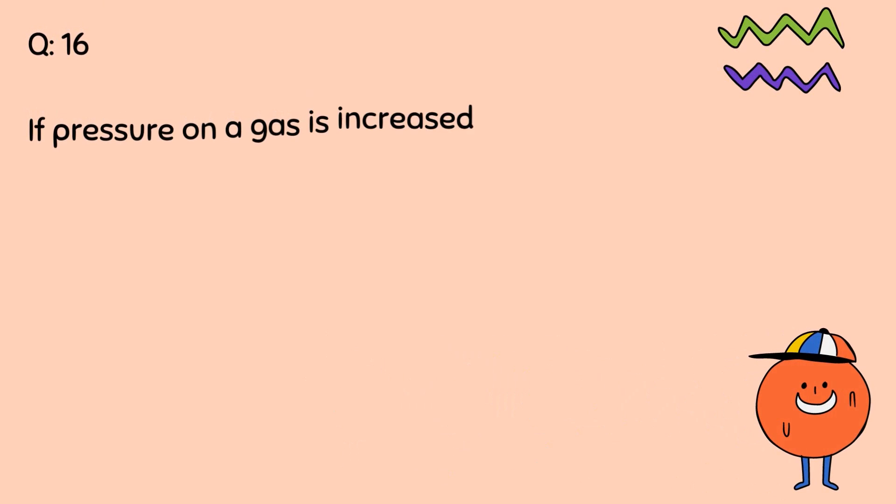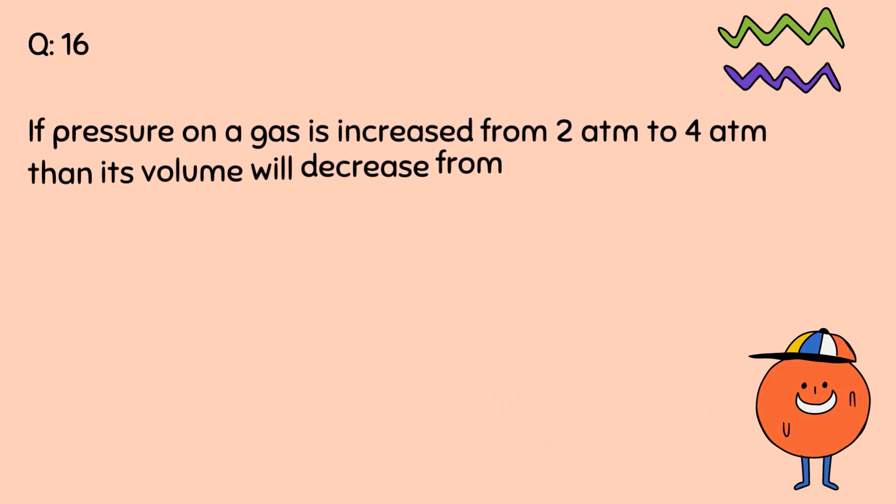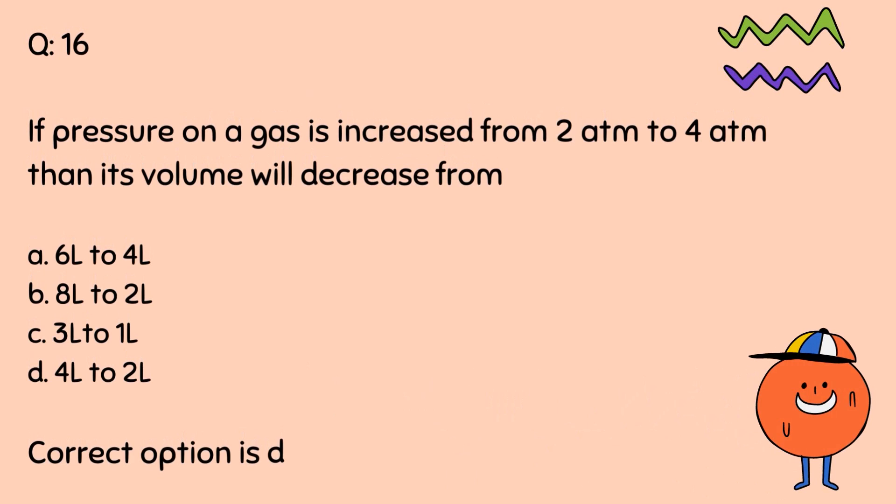Question number 16. If pressure on a gas is increased from 2 atm to 4 atm, then its volume will decrease from: A. 6 liters to 4 liters. B. 8 liters to 2 liters. C. 3 liters to 1 liter. D. 4 liters to 2 liters. Correct option is D.